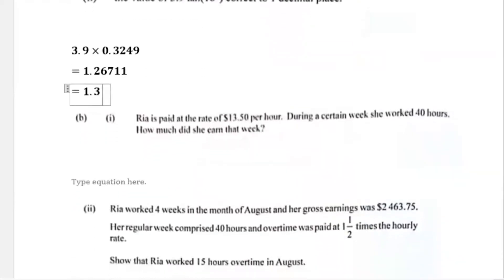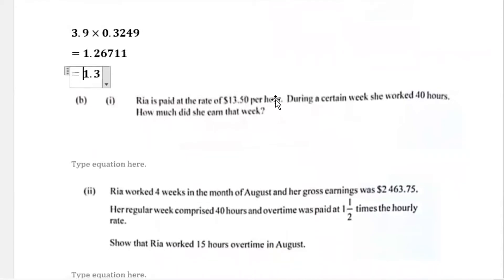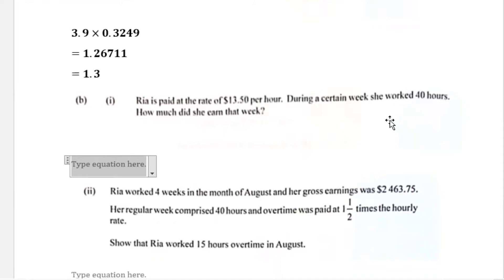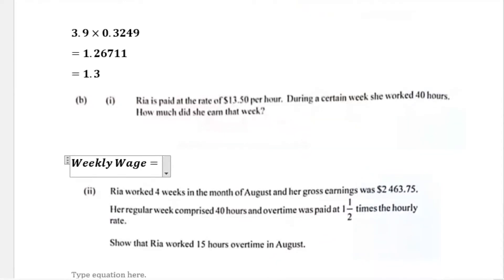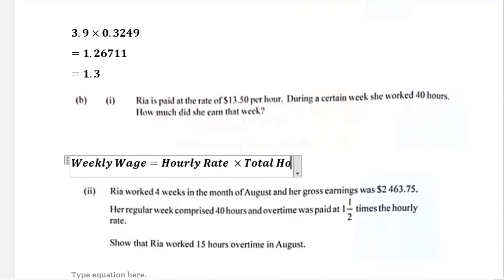Part b1 says Ria is paid at the rate of $13.50 per hour. During a certain week she worked 40 hours. How much did she earn that week? All we're doing is calculating her weekly wage, which equals the hourly rate multiplied by the total hours.